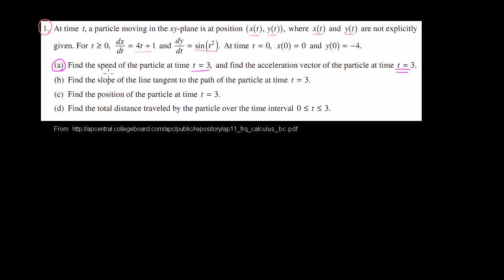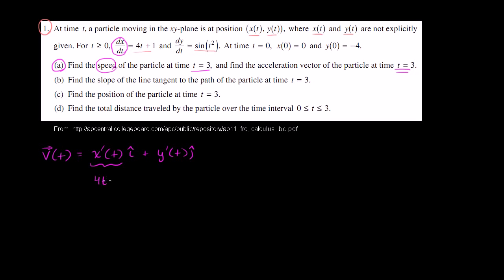The speed is really just the magnitude of the velocity vector. Our velocity vector as a function of time is going to be equal to the derivative of our x position as a function of time — the velocity in the x direction times the i unit vector — plus the velocity in the y direction times the j unit vector. I just wrote this in engineering notation. In this case, x prime of t, they've already given it to us: x prime of t is 4t plus 1. So this is 4t plus 1 times the i unit vector. And then y prime of t, they gave it to us: the derivative of y with respect to t is sine of t squared, so plus sine of t squared times the j unit vector.